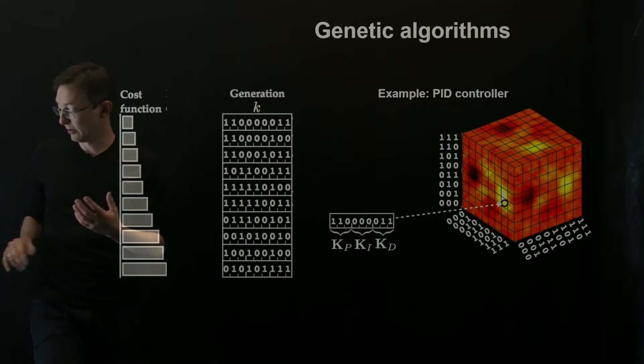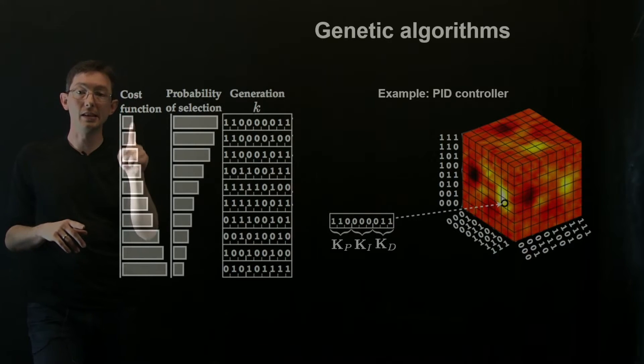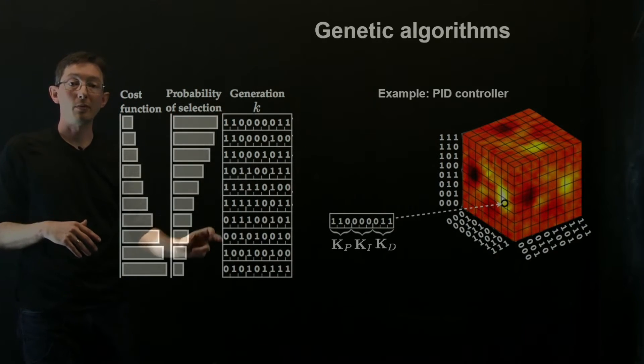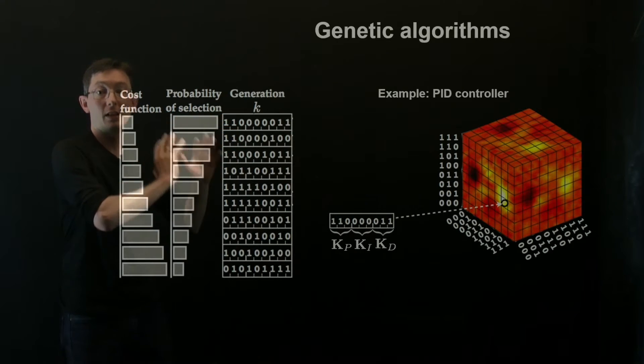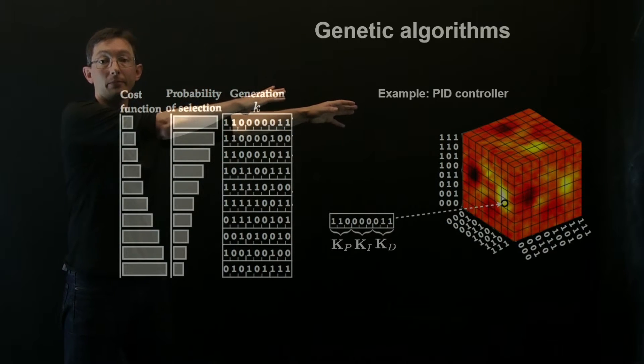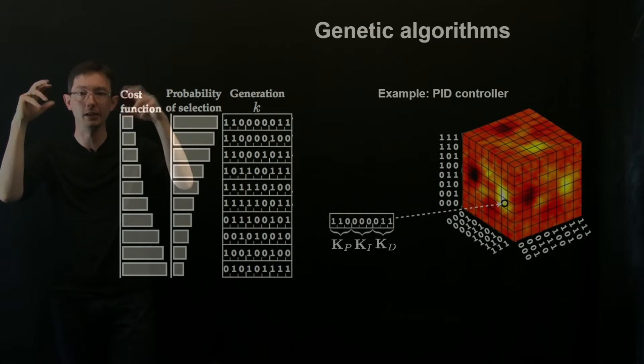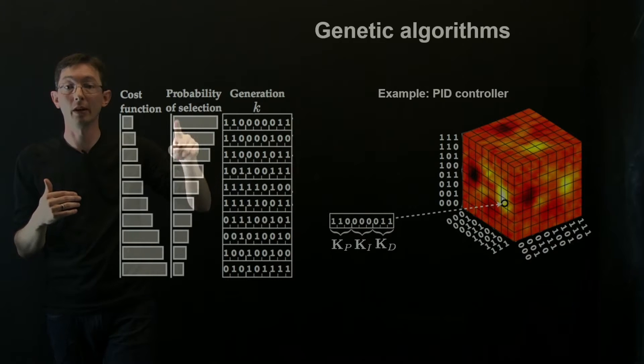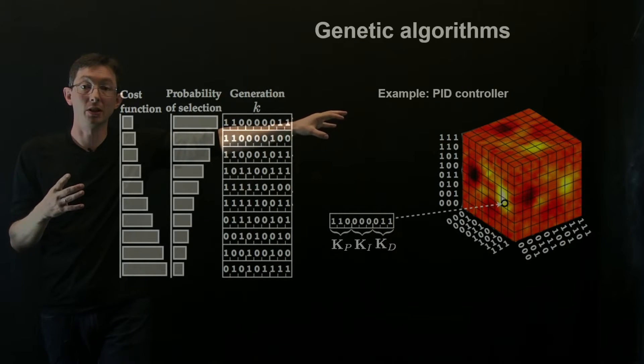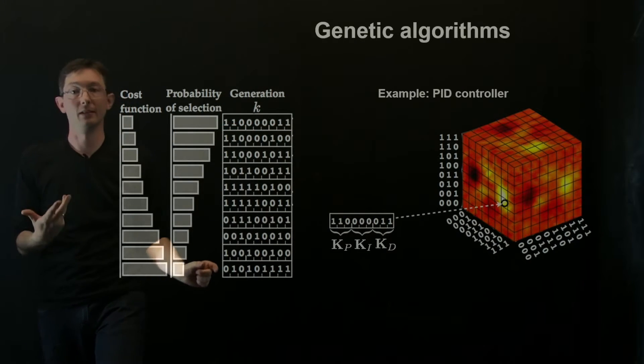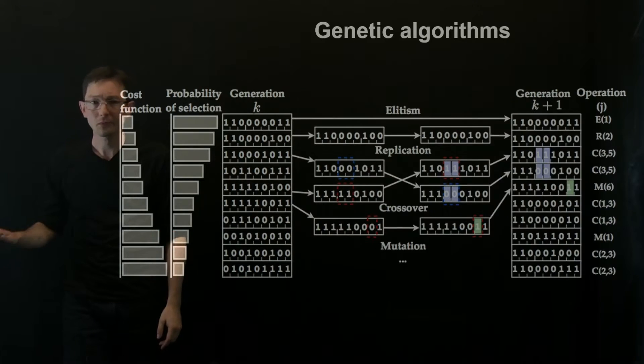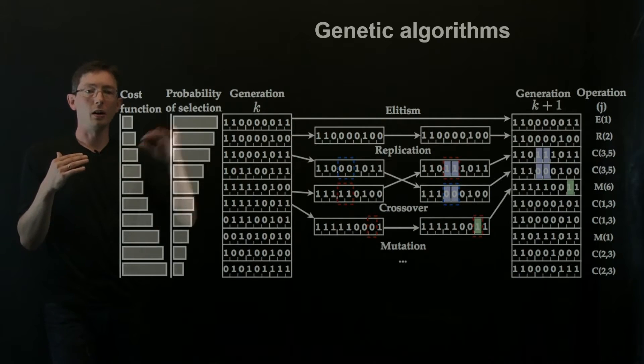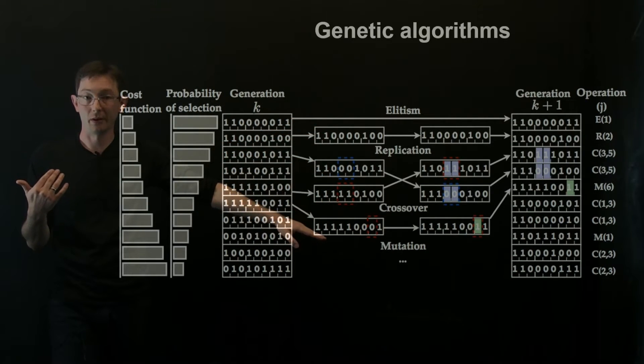So now what the genetic algorithm does is it essentially uses these cost functions, the performance, the fitness to determine the probability of each of these control laws advancing to the next generation. So these are going to breed in some weird way. And I want the most effective control laws to be more expressed in the next generation's genetic pool than these least effective control laws. And so based on this probability of selection, essentially there are a number of these genetic operations I get to choose from.